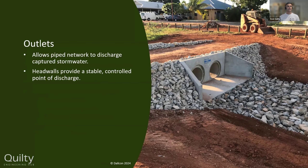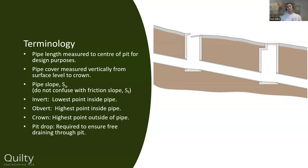At the outlets, the pipe network discharges all captured stormwater. We don't just leave the pipe end sticking out of the ground — we provide headwalls, which give a stable and controlled point of discharge. This helps reduce scouring or erosion problems from stormwater runoff discharging out of the pipes. Those are the physical elements of a piped system.